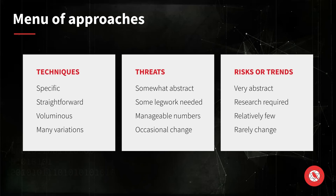Next, we have threats. These are a little more abstract — a threat comprises a number of techniques in a particular sequence. There could be some legwork needed to take a threat like Gootloader and understand what techniques it uses and which implementations are most relevant. But these are more manageable in number — you're not going to have thousands of threats to worry about. They do change occasionally. Threats are most commonly the who behind attacks — the adversaries — and they'll adapt their techniques and implementations in response to our defenses once we start detecting and interdicting them.